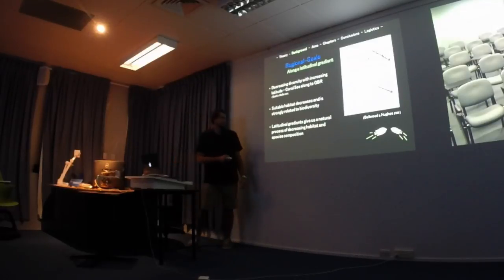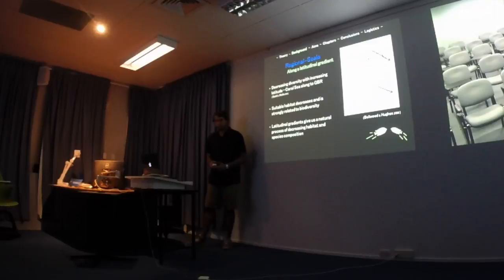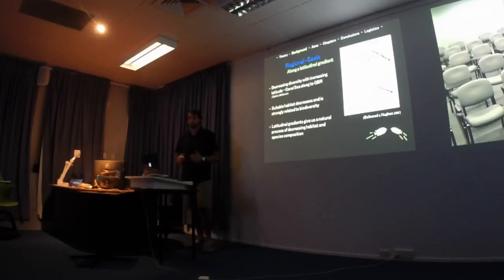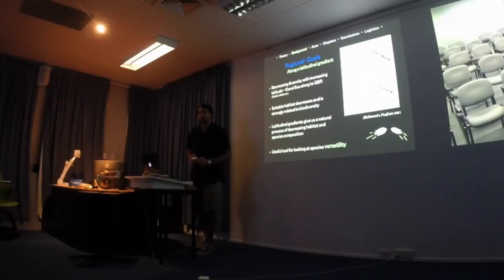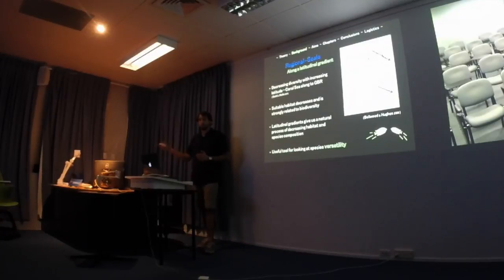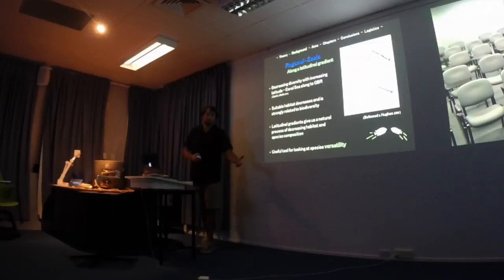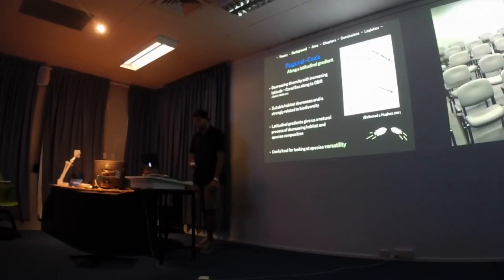This gives us a natural process of decreasing habitat and decreasing species composition, making it a really useful tool for looking at versatility — comparing a species where there are many competitors versus where there are very few, alongside a decrease in habitat space.